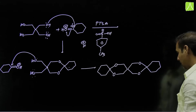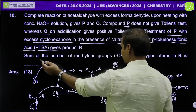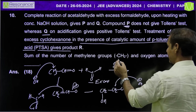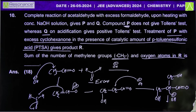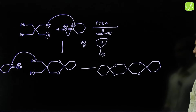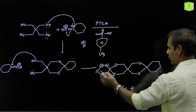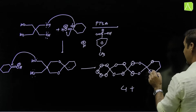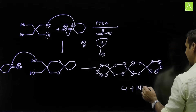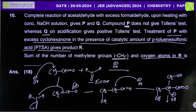The question asks for the sum of the number of methylene groups and oxygen atoms in R. Counting oxygens: 4. Counting methylene groups: 1, 2, 3, 4, 5, 6, 7, 8, 9, 10, 11, 12, 13, 14 — that's 14 methylene groups. Sum = 14 + 4 = 18. The answer is 18.